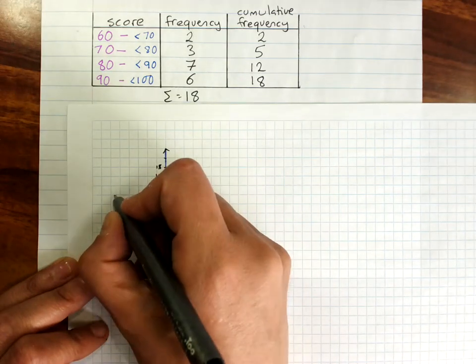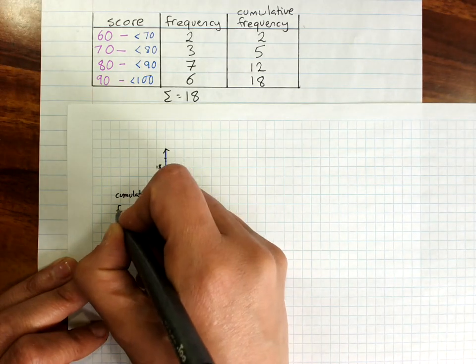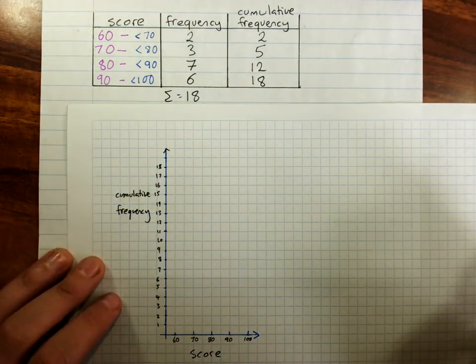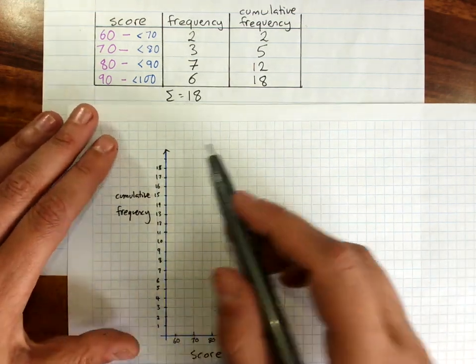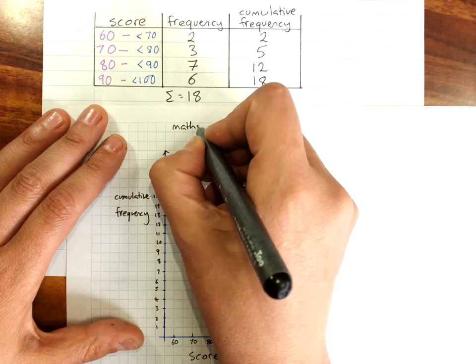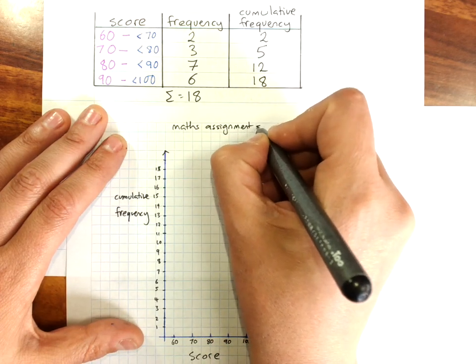And this is cumulative frequency. If we had more information, we could put that in the title. So this was scores in a maths assignment. Maths assignment scores.